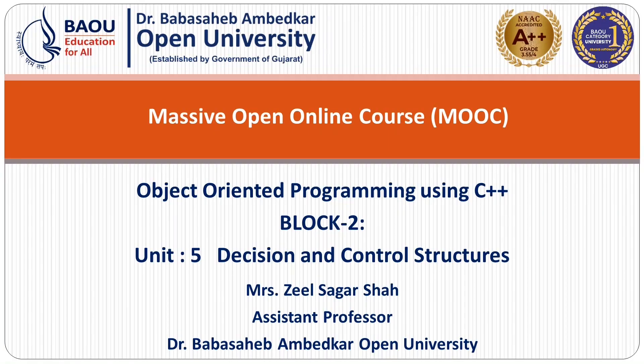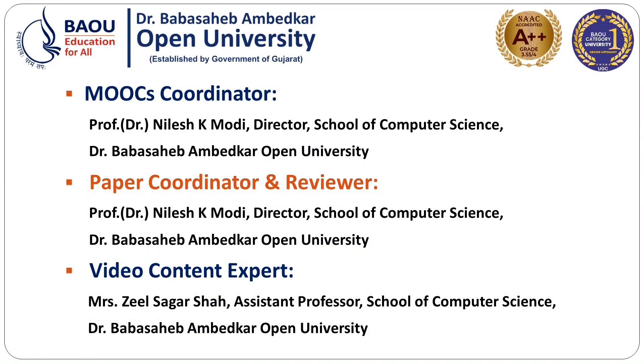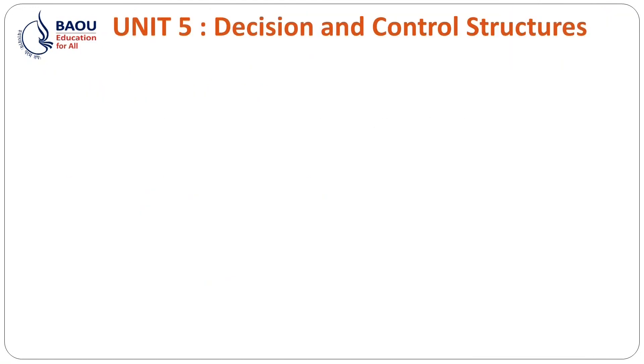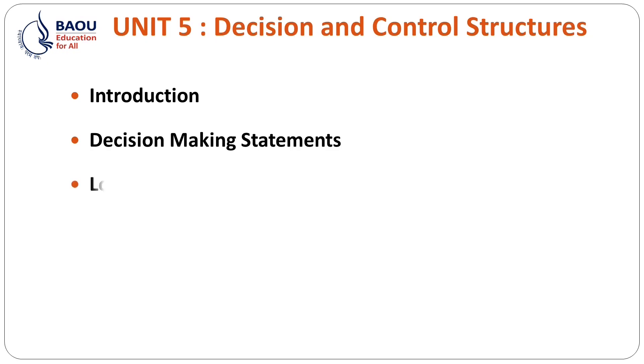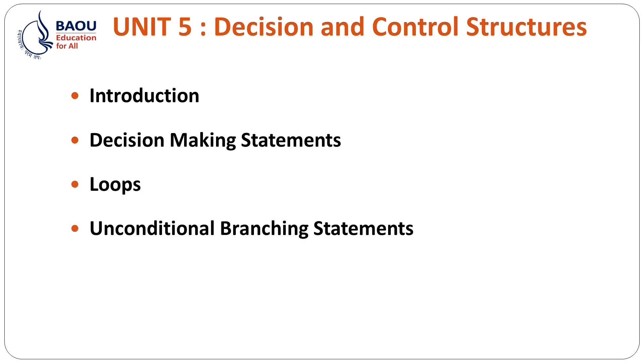In the last lecture, we have studied about the operators and manipulators in C++. Currently, we are in the lecture series of Object Oriented Programming using C++ and in that we are in Block 2, Unit 5 that is Decision and Control Structures. In this, we will study about the Decision Making Statements, Loops, and Unconditional Branching Statements.